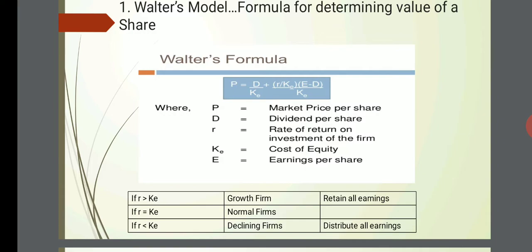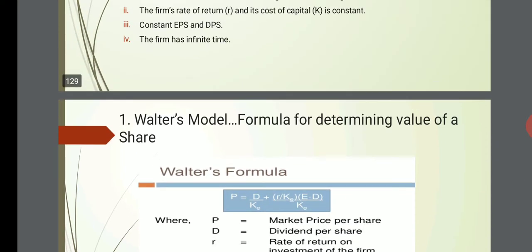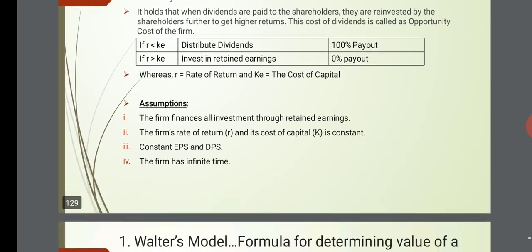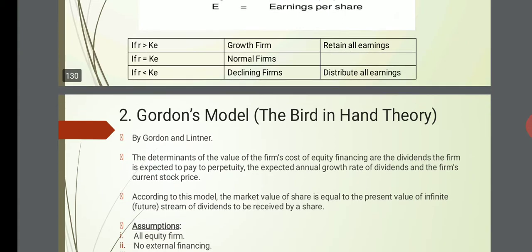Walter's model formula: P = [DPS/ke + (r/ke) × (EPS − DPS)] / ke. If r > ke, it is a growth firm — retain all earnings. If r = ke, it is a normal firm. If r < ke, it is a declining firm — distribute all earnings. This completes Walter's model.